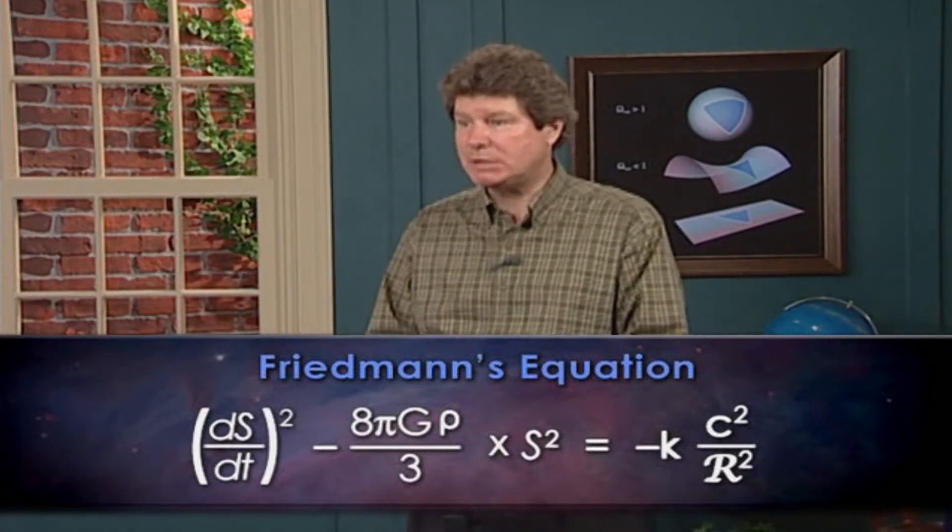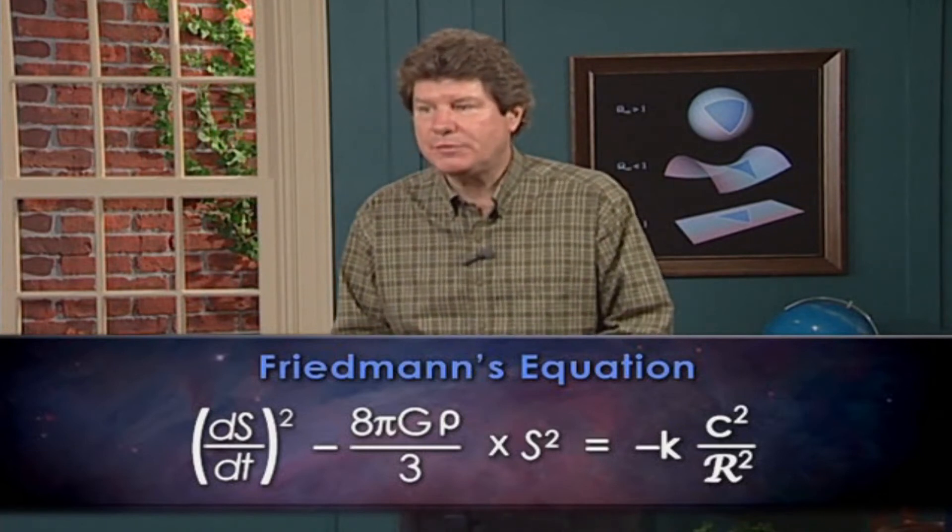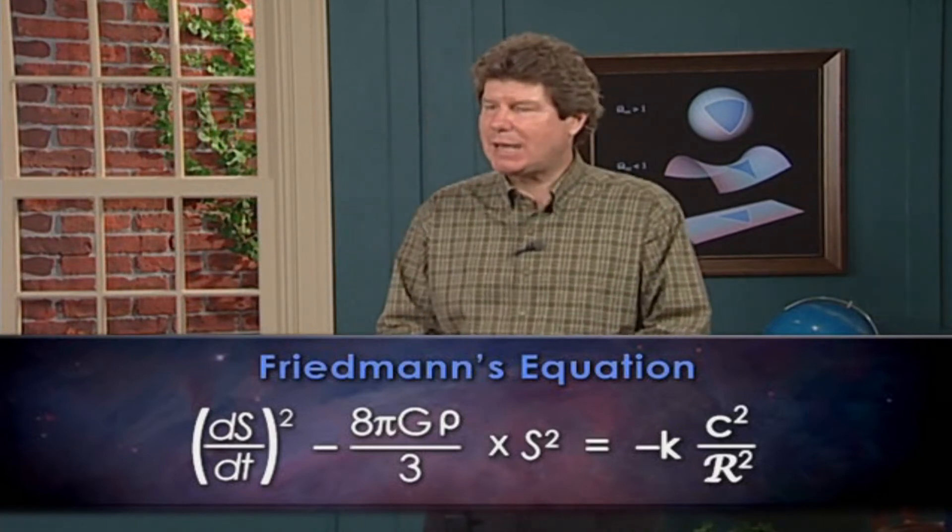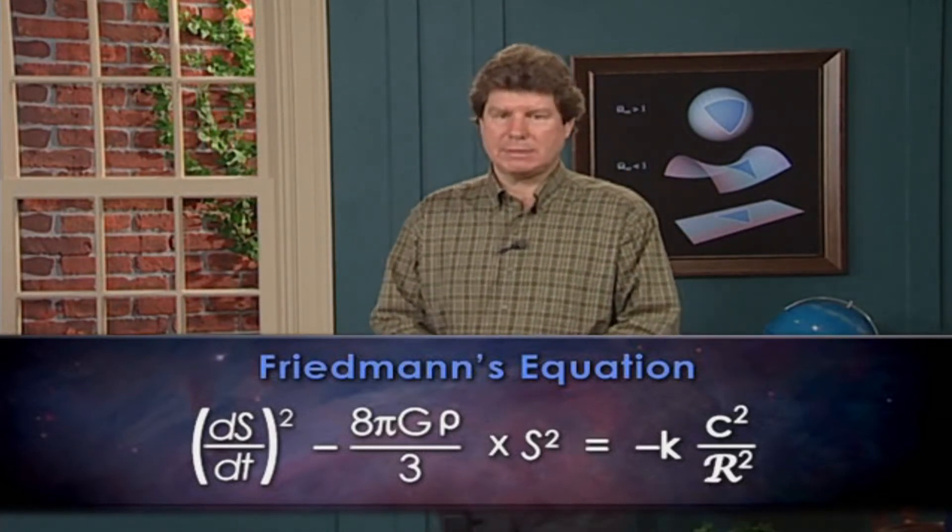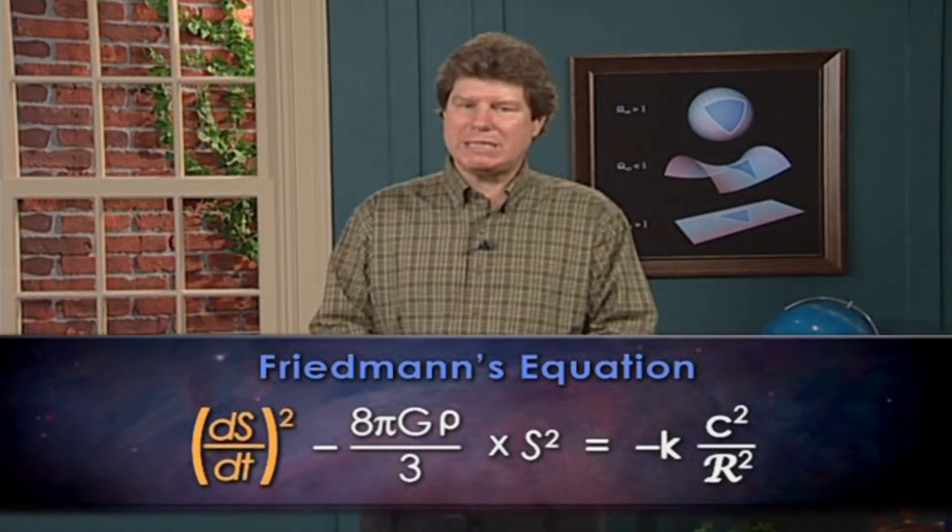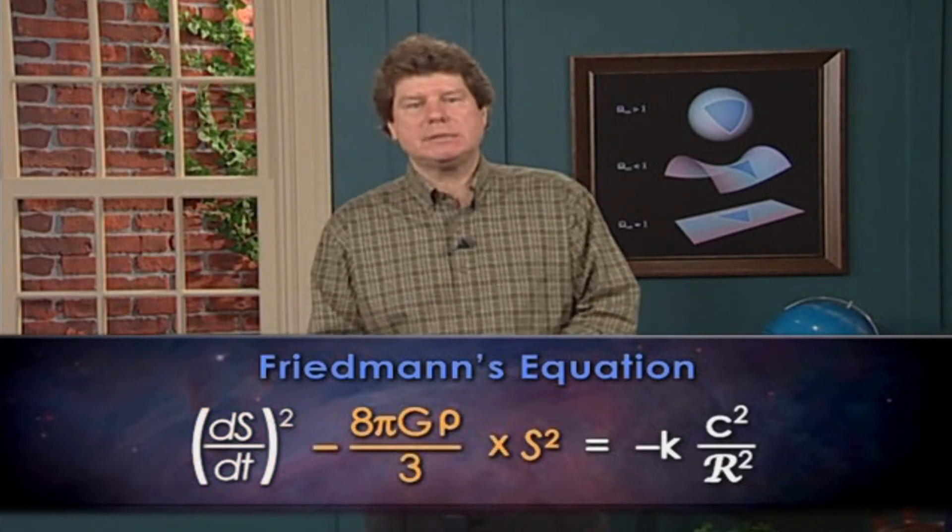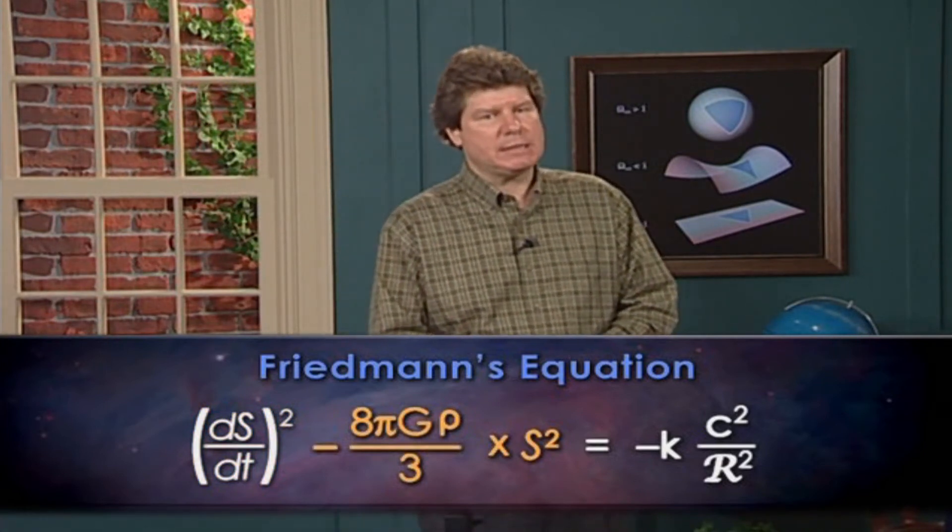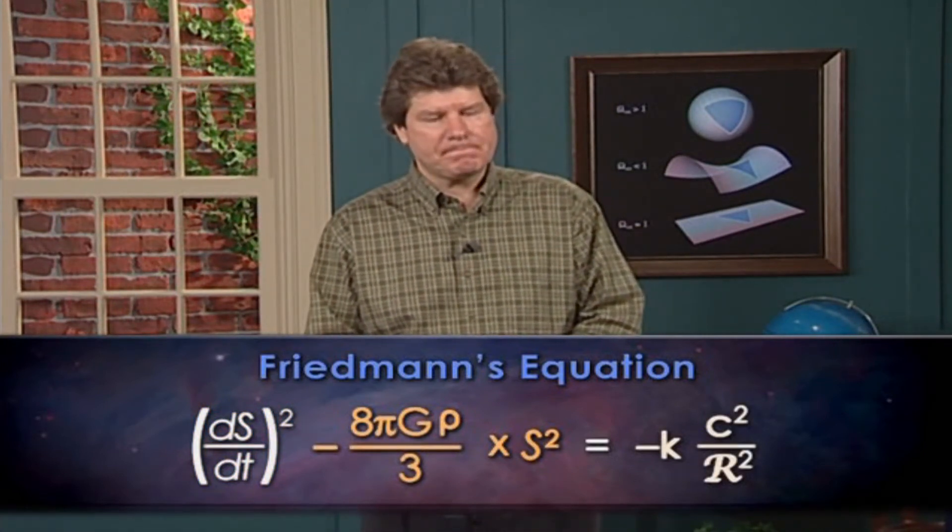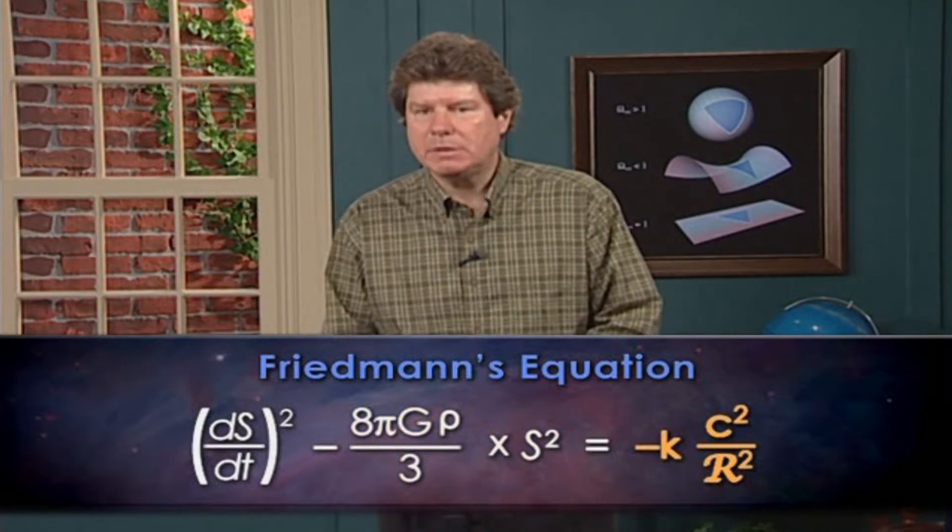It has three terms, and the two on the left look like things we've encountered in our Newtonian analysis. The first is the rate of change of the scale factor, squared, and the second includes the cosmic density and the scale factor.